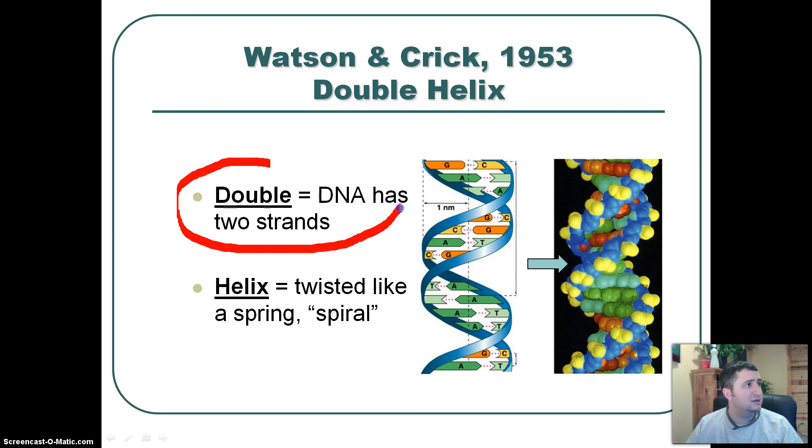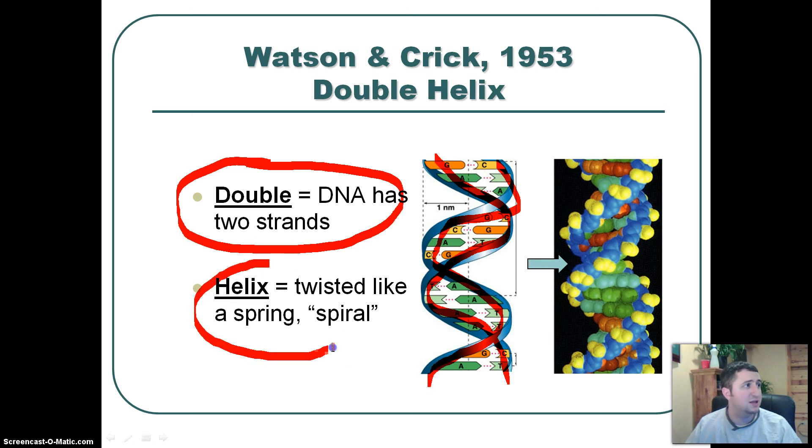So again, DNA has two strands. I'm going to circle, I'm going to highlight one, and then I'm going to highlight the other. So that's two strands of DNA, and it's twisted like a spiral, sort of like a slinky, all together.